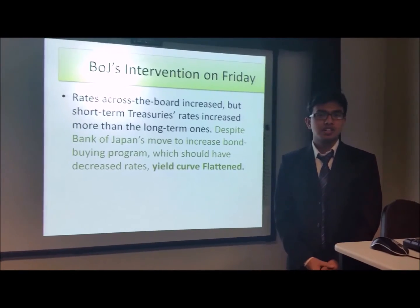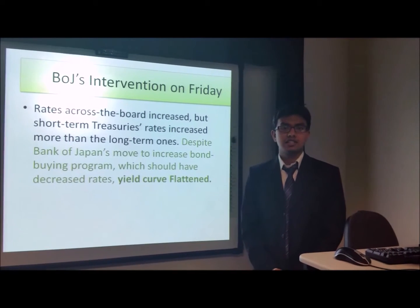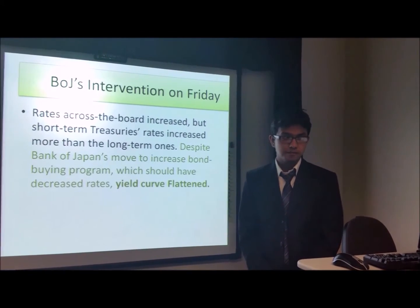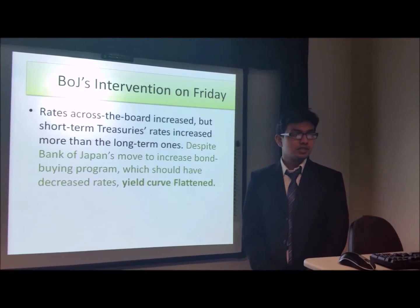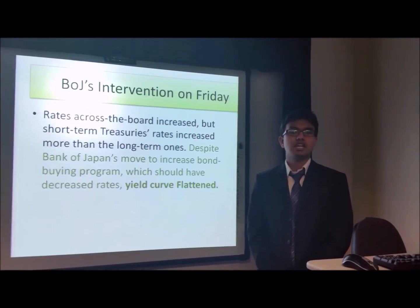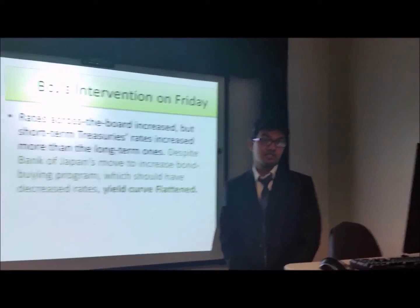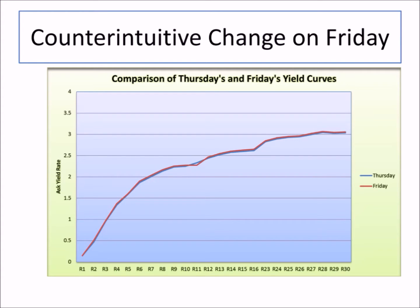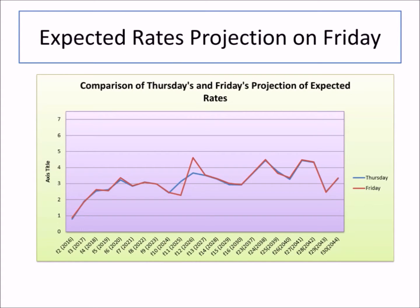On Friday, there was a Bank of Japan announcement that it will increase its bond-buying program. Despite this move to increase such bond-buying programs, rates actually flattened — this is clearly counterintuitive because rates should have decreased across the board. The expected one-year rates had lots of volatility, especially for years 9, 10, and 11. The market is reacting more forcefully to the 10-year note rate after Wednesday's FOMC announcement.